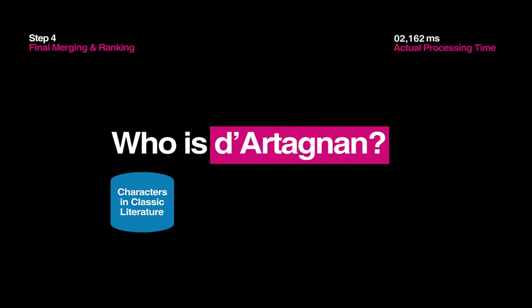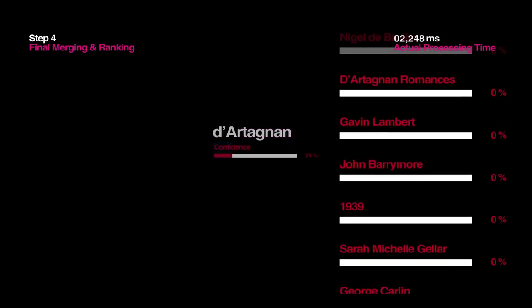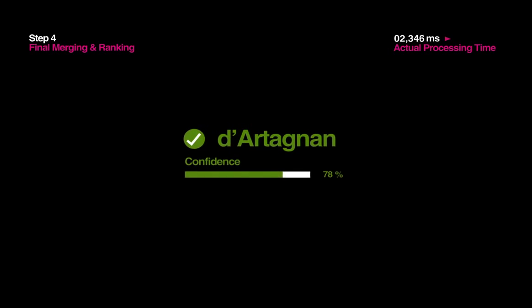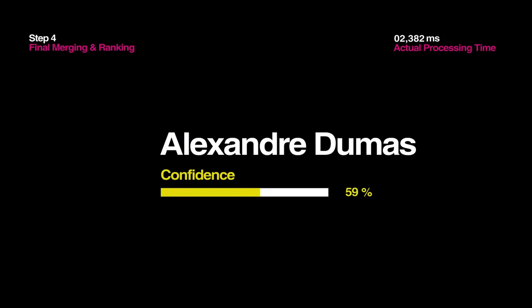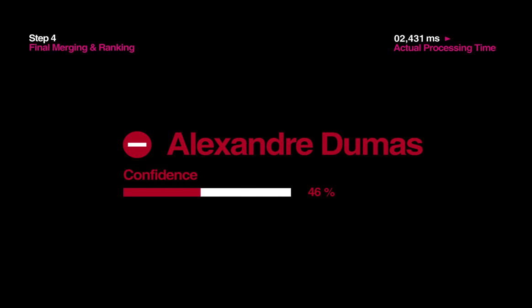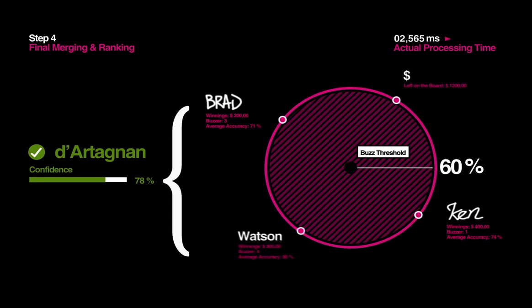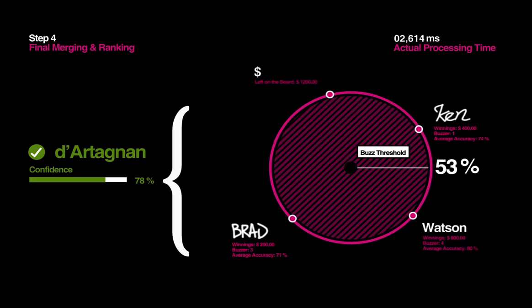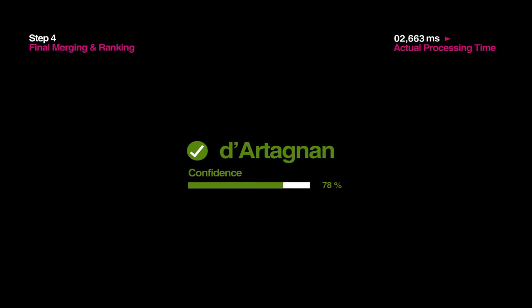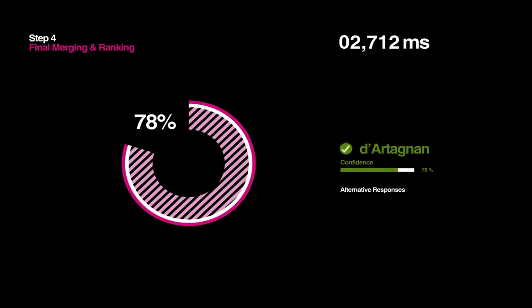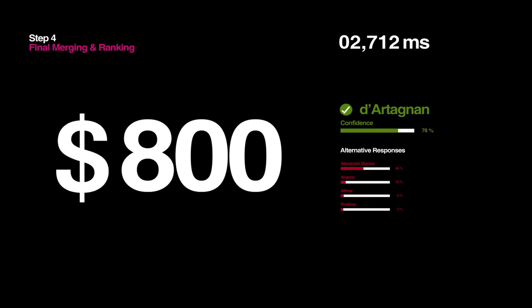In Jeopardy, contestants lose money if they buzz in with the wrong answer, so Watson estimates its confidence as to whether or not its top answer — along with every other answer possibility — is correct. This confidence is based on how high the answer is rated during evidence scoring and ranking. If Watson's confidence for its top answer is low, under 50 percent for example, then Watson won't answer. Watson knows what it knows, and it knows what it doesn't know. There is no fixed confidence level deciding whether or not Watson buzzes in — the threshold is constantly changing based on how well Watson is doing relative to the other players and how much money is left on the board. In this case, Watson arrived at its answer with a 78 percent confidence, which was a high enough confidence level to buzz in, and it won Watson $800 in the process.